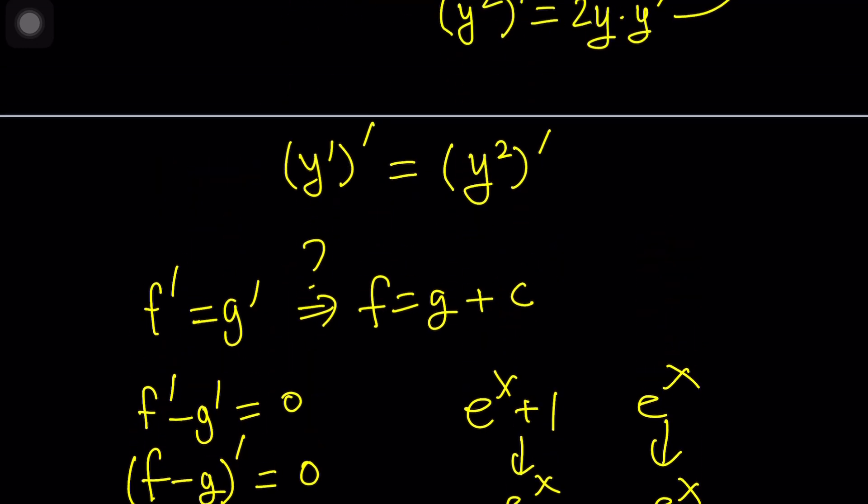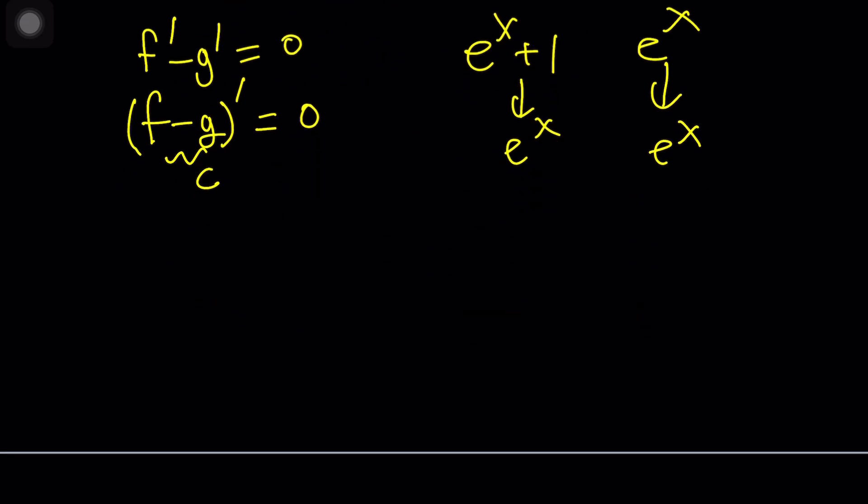I can give you lots of examples on this, but think about it this way. E to the power of x plus 1, and e to the power of x, when you differentiate, they both give you e to the power of x, and they differ by a constant. Now, this is very helpful information, because this is basically how we are going to solve this differential equation. So let's go ahead and apply that property, calling this f and calling this g, we get y prime equals y squared plus c.